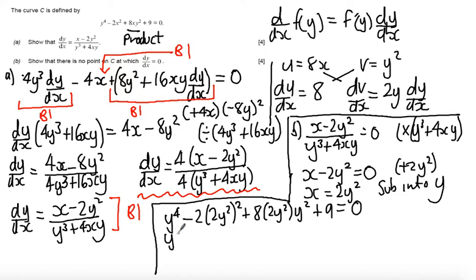So, simplifying, I get y to the power of 4 minus 2y squared is 4y to the power of 4 but then we get 2 times that so I get minus 8y to the power of 4. I then get plus 16y to the power of 4 plus 9 equal to 0. Tidying up again I get 17y to the power of 4 minus 8y to the power of 4 so I get 9y to the power of 4 plus 9 equals 0.